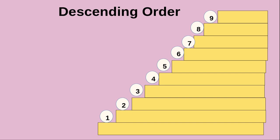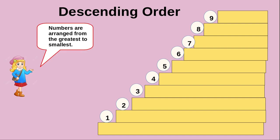Now next we will see descending order. So what is descending order? We know that ascending order is smallest number to greatest number. Descending order is the opposite — arranging the numbers from greatest to smallest. We are going to arrange the numbers from 9 to 1 in descending order. So descending order is nothing but arranging the numbers from greatest to smallest.